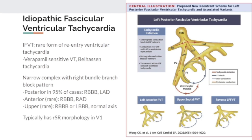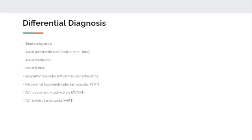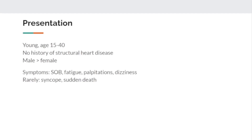Typically there is an RSR morphology in V1, which our patient does have on a subsequent EKG. The differential is broad initially and would include sinus tach, atrial tachycardia, A-fib, A-flutter, paroxysmal SVT, AVNRT, AVRT, Lown-Ganong-Levine syndrome, Wolff-Parkinson-White syndrome, and junctional tachycardia — and that's not even a complete list. The typical patient is a young male with no history of structural heart disease, presenting with shortness of breath, fatigue, palpitations, and dizziness.